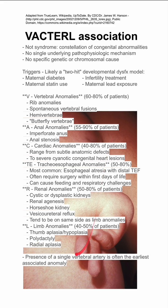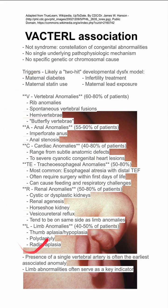The presence of a single vertebral artery is often the earliest associated anomaly, and limb abnormalities are often the key indicator noticed first that then prompts investigation of the remaining anomalies.